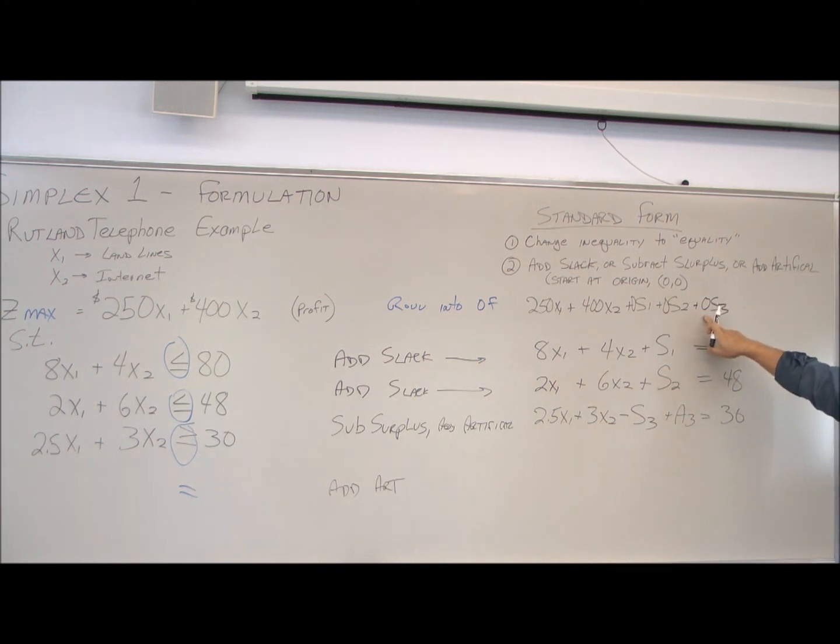Now the standard form is to add 0s3, but anything times 0 is 0, so if you subtract 0s3, it would be the same. And we have to account for our artificial.